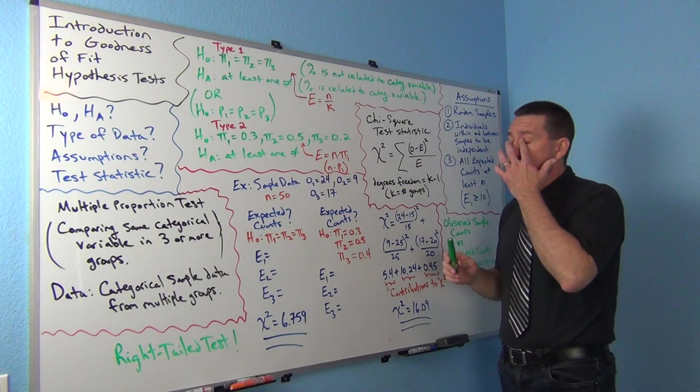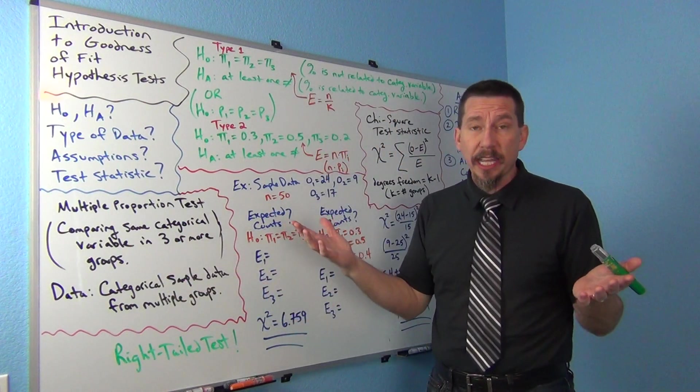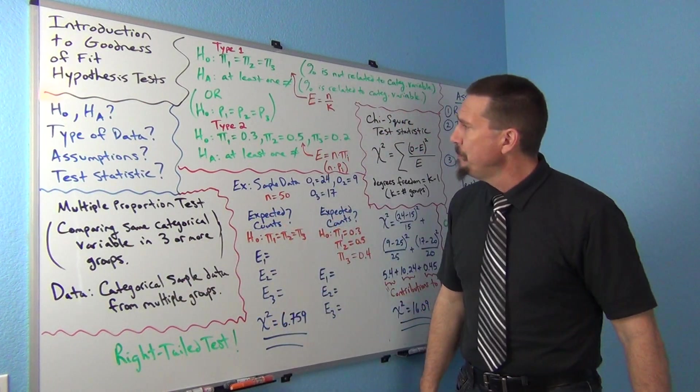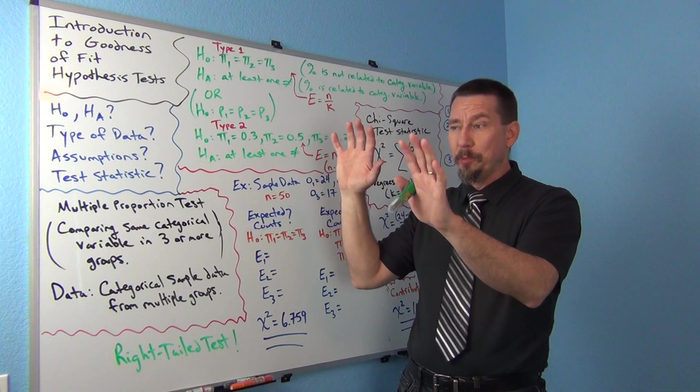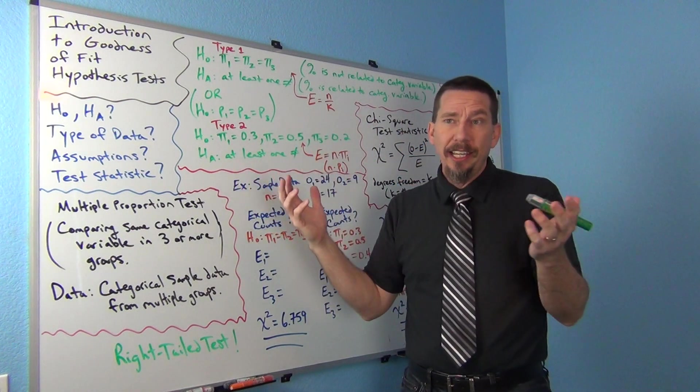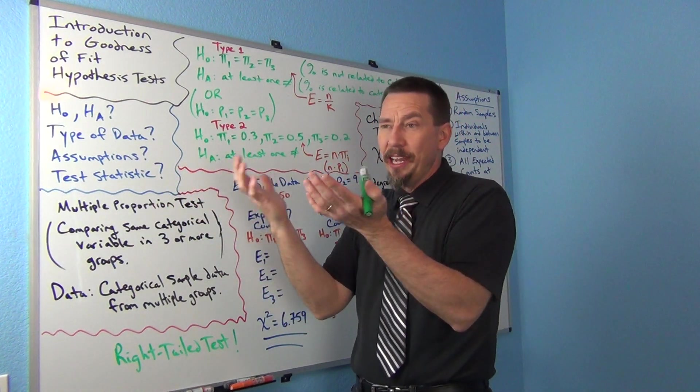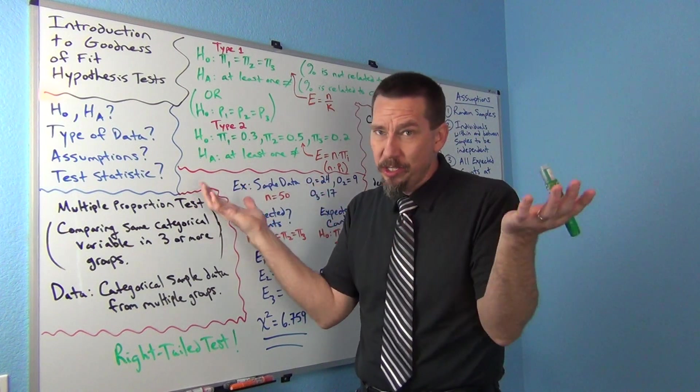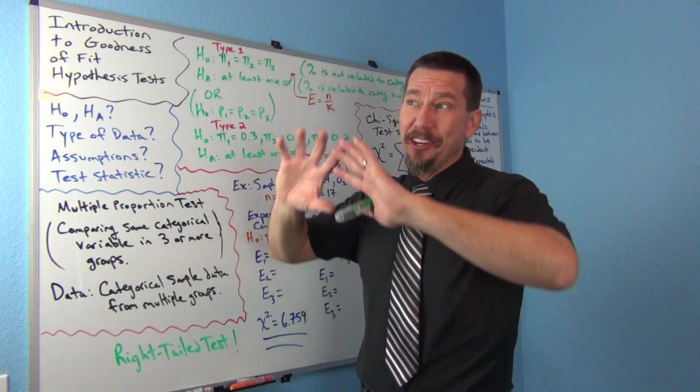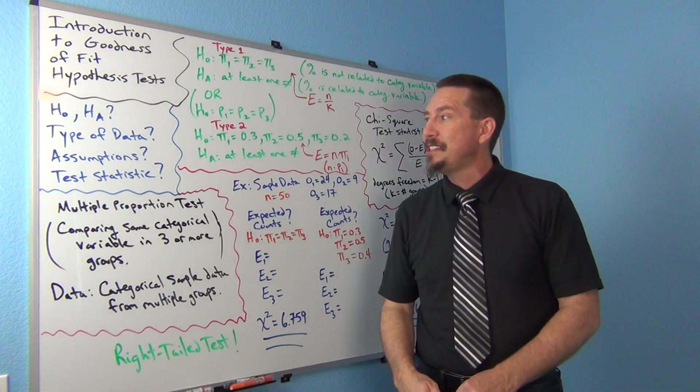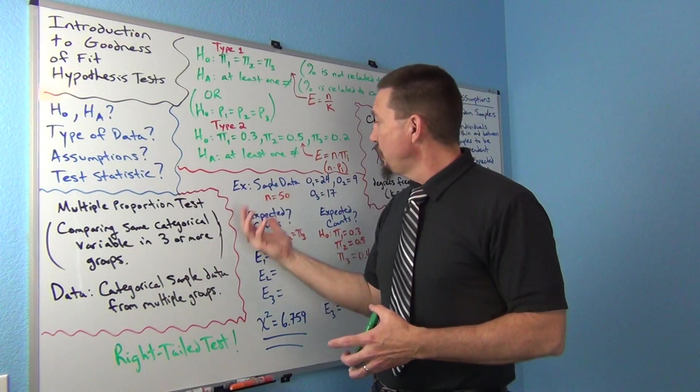So the test statistic, again, in the two population proportion test, we could use a z-score, right? We could use the z-score test statistic. But again, that just compares how many standard errors this sample proportion is from this sample proportion. Well, if we got 10 different sample proportions, that z-score is not going to work. We're not going to be able to compare the number of standard errors between the sample proportions with a z-score if you've got 10 groups. So we have to get a bigger test statistic now. We're going to move into a new test statistic. Just like with ANOVA, we had to move into the F test statistic, we couldn't use T. Now we're moving into a new test statistic.